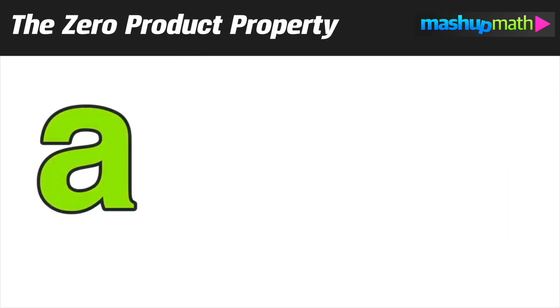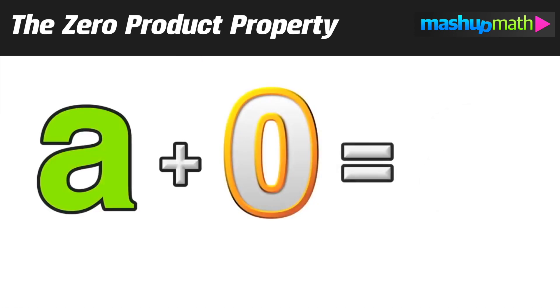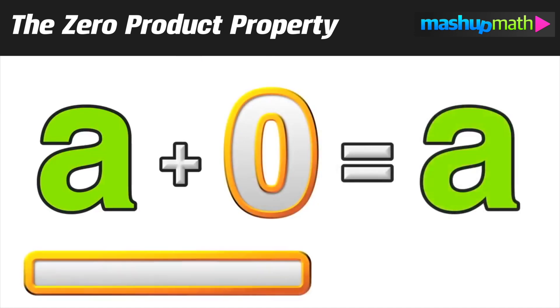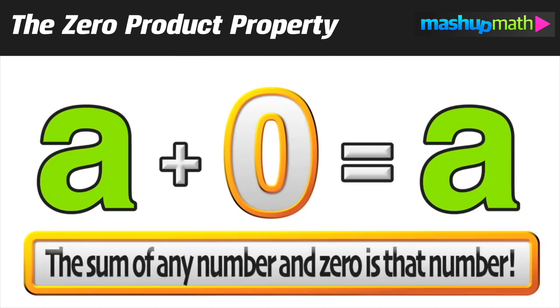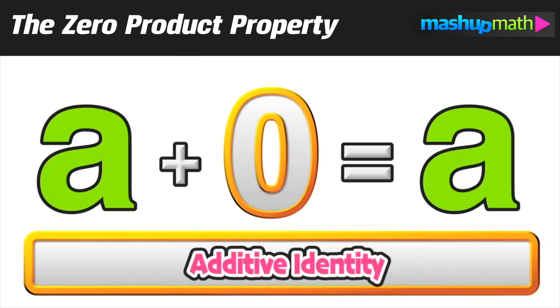Now, the first property of zero we're going to talk about is taking any value, we'll call it a, and adding zero to it, and getting back that same value. So basically, the sum of any number and zero is that same number. This property is called the additive identity.